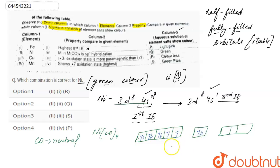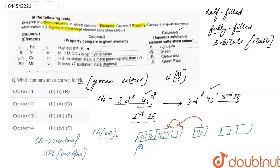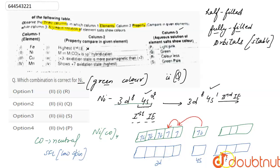Carbonyl is a strong field ligand, so it forms low spin complexes — there will be pairing of electrons. The electrons pair up, and the extra electrons go into empty d orbitals. After pairing, all d orbitals are completely filled, leaving one 4s and three 4p orbitals empty. These vacant sp³ orbitals are used by the ligand to form coordinate bonds. So the hybridization here is sp³ — the second property is correct.